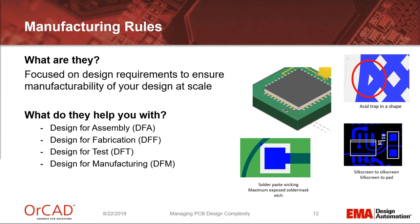Manufacturing rules are one of the things that in the past, everybody throws over the wall — the folks at the manufacturer will look for assembly rules, move your components around because the solder flow won't work properly with a bigger part in front of a smaller part. Physical acid traps, silk screen, solder paste wicking, maximum exposed solder edge, solder mask edge — there's a ton of manufacturing rules and complexities that need to be managed at the very same time you're managing your physical, spacing, and electrical rules. You want to have all of that in one spot.